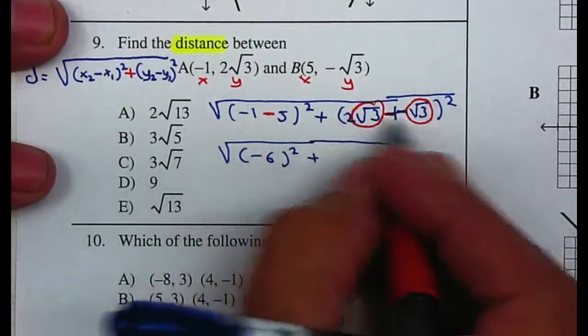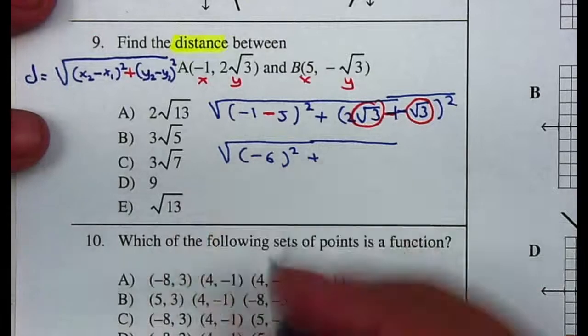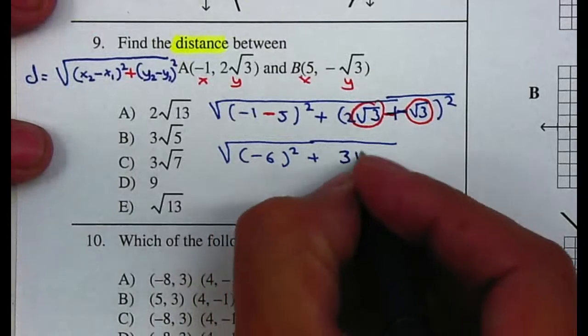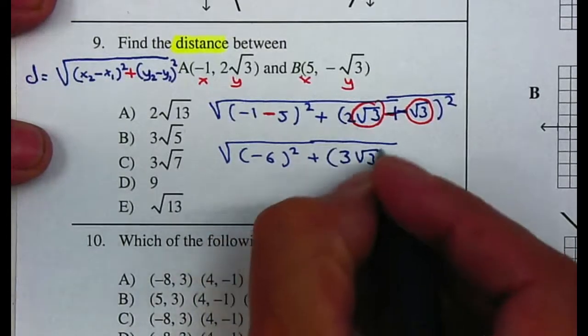So we have 2x plus 1x will give us 3x, but in this case it will be 3√3, squared.